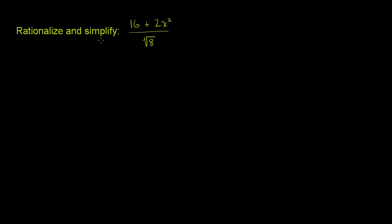We're asked to rationalize and simplify this expression right over here. And like many problems, there's multiple ways to do this. We could simplify a little bit, then rationalize, and then simplify a little bit more. Or we could just rationalize and simplify. Rationalize is just a fancy way of saying we don't want to see any square roots of numbers in the denominator. So try to get these things outside of the denominator.